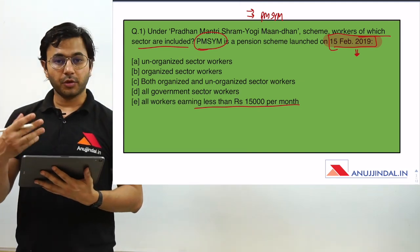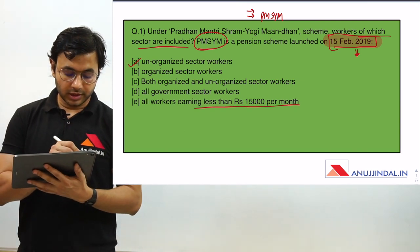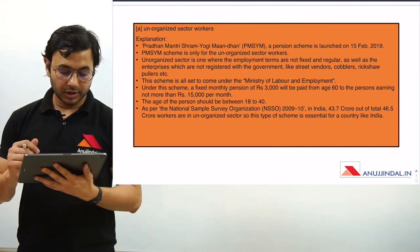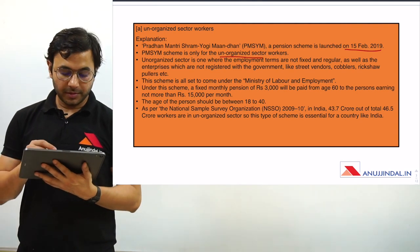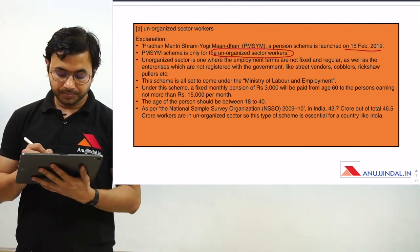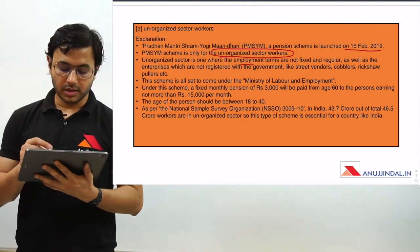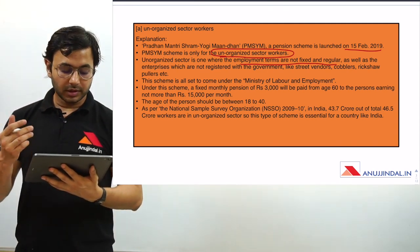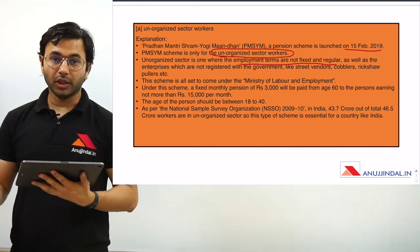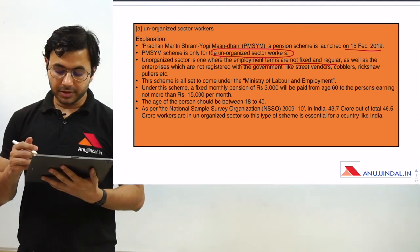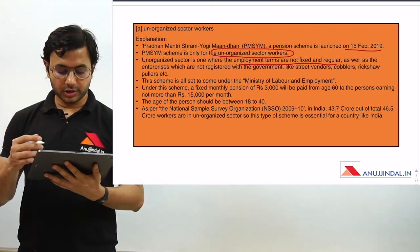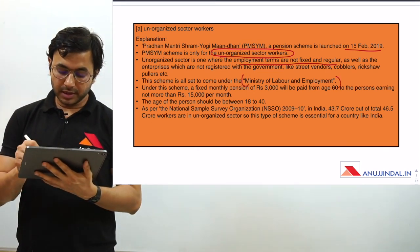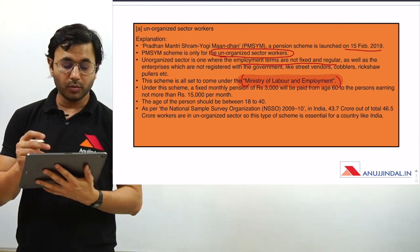The answer is A — unorganized sector workers. A little bit more about Pradhan Mantri Shram Yogi Mandhan: it was launched on 15th February and it is only for unorganized sector workers. What exactly is an unorganized sector worker? It is where employment terms are not fixed and regular — you don't know when you are going to be fired — and the enterprise is probably not registered with the government, or you are not getting social security benefits. For example: street vendors, cobblers, rickshaw pullers — all these people do not have any social security benefits. This particular scheme comes under the Ministry of Labour and Employment — a very important aspect regularly asked by RBI.